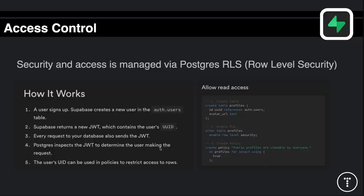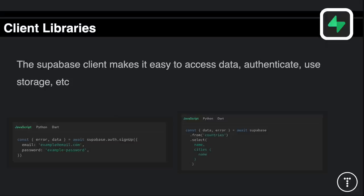Postgres will inspect the JWT to determine the user making the request. Every request you make when logged in, that user ID will be sent, and it can be used in policies to restrict access to rows. Here's an example from the documentation - it's just SQL creating a table called profiles, enabling RLS, and then creating a simple policy. You can either type it in SQL or use the GUI which I'll show you in a minute. For client libraries we'll be using the JavaScript library, but there's also Python and a Dart library for Flutter.